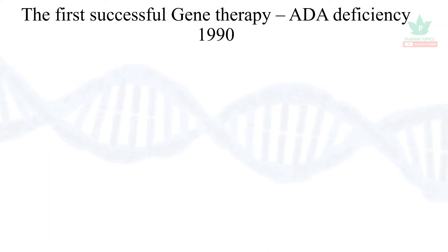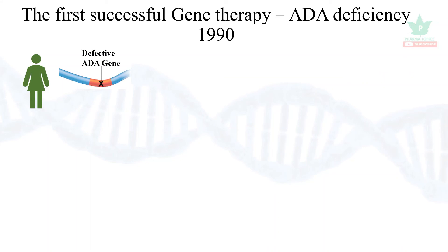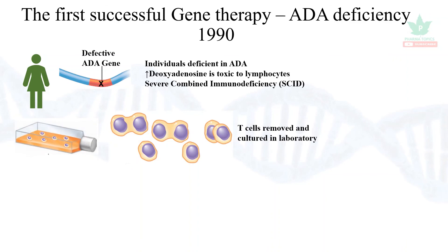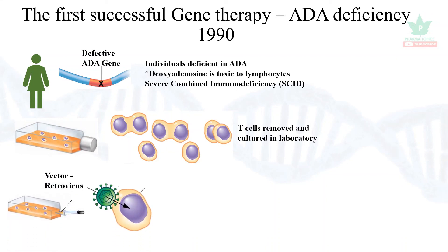The first successful gene therapy was used for adenosine deaminase (ADA) deficiency in the year 1990. In a host with a defective ADA gene, individuals have a deficiency of adenosine deaminase, leading to increased concentration of deoxyadenosine. Beyond a certain limit, this is toxic to lymphocytes, resulting in severe combined immunodeficiency disease. In this technique, T cells are removed from the patient, cultured, and with the help of a retrovirus, the good genes are incorporated into the T cells.